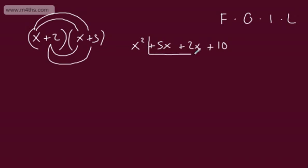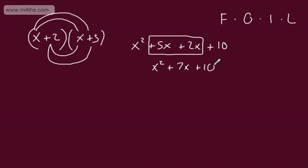Collecting the like terms — the terms in x — we can now write x squared plus 7x plus 10. And we've expanded that out.